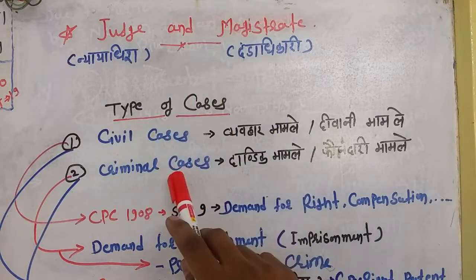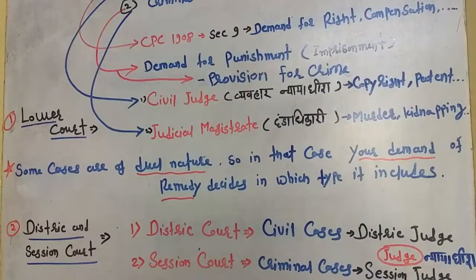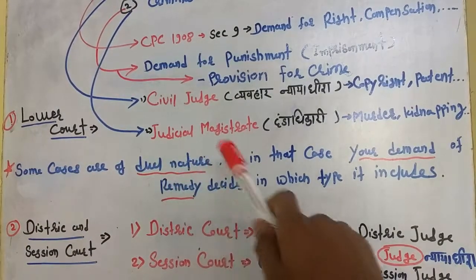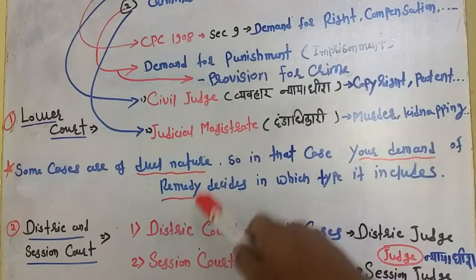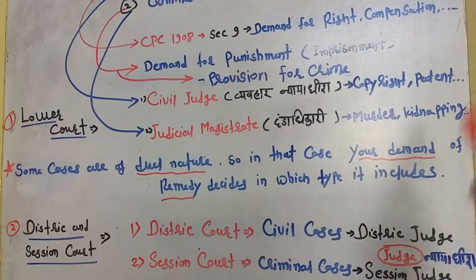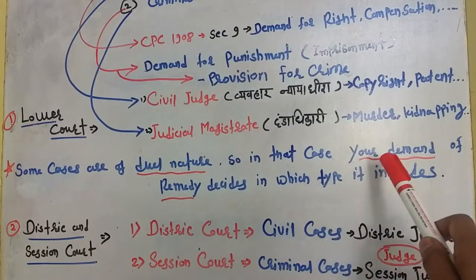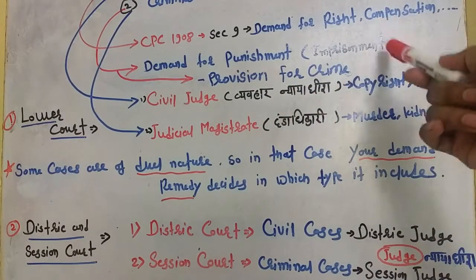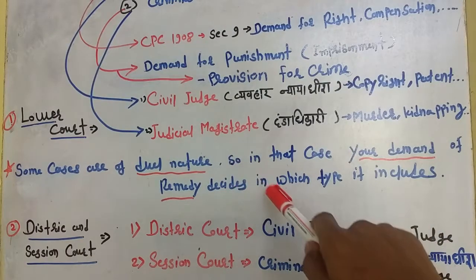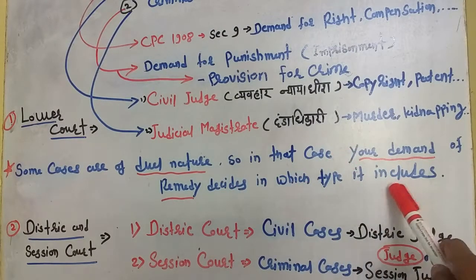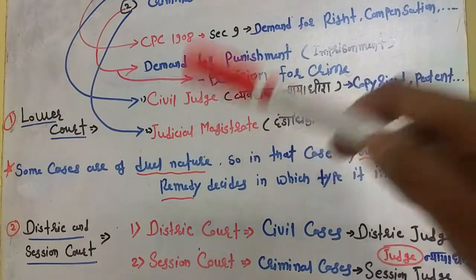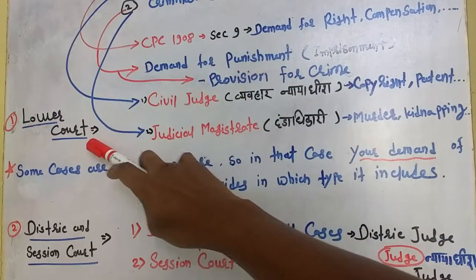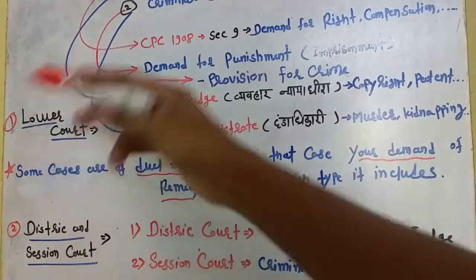So the same case — whether you ask for rights or punishment — will decide which type of case it falls into: civil cases or criminal cases. Now, here we come to the lower-most layer of the Indian Judiciary System, which is called the lower court.